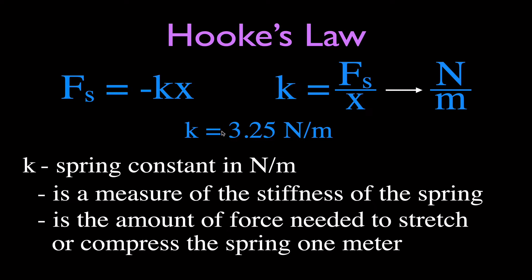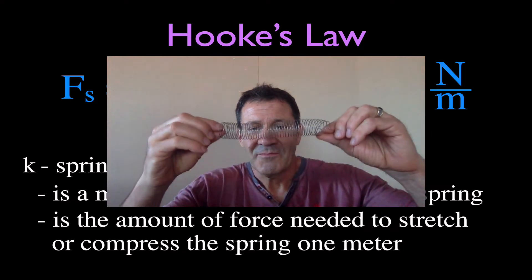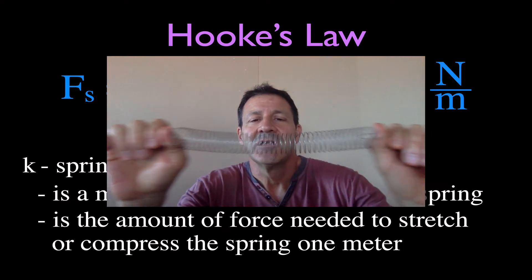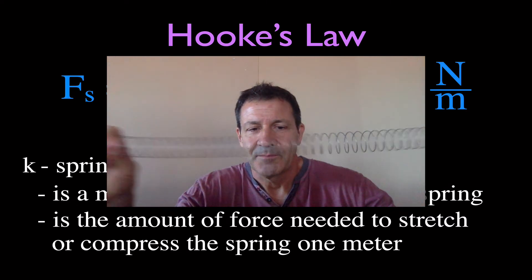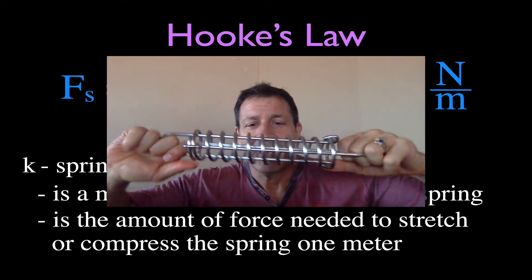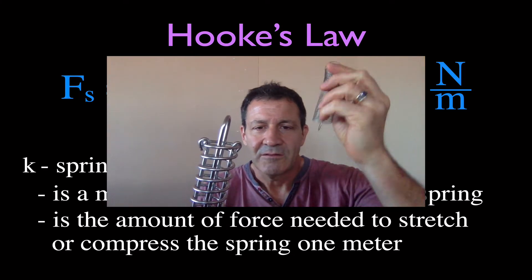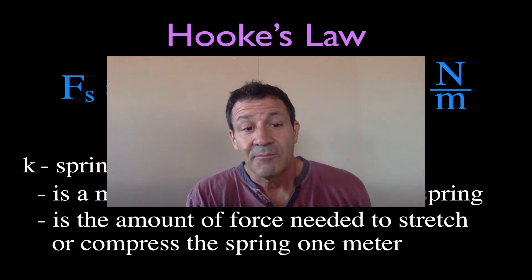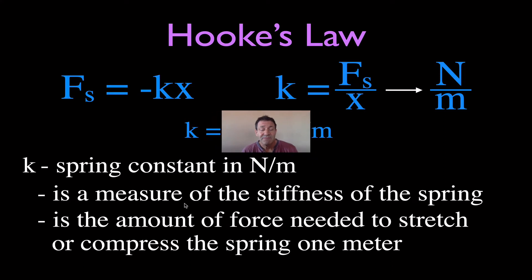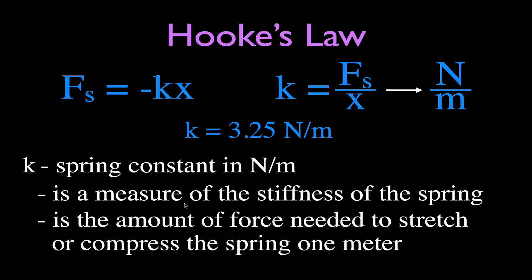Every spring has its own spring constant. Some springs are stiffer and some are softer. A relatively soft spring takes very little force to change its length and has a low spring constant. A stiffer spring takes a lot of force to change its length and has a much higher spring constant. The spring constant is a measure of the stiffness of the spring — the higher the spring constant, the stiffer the spring — and it represents the amount of force needed to stretch or compress a spring one meter.